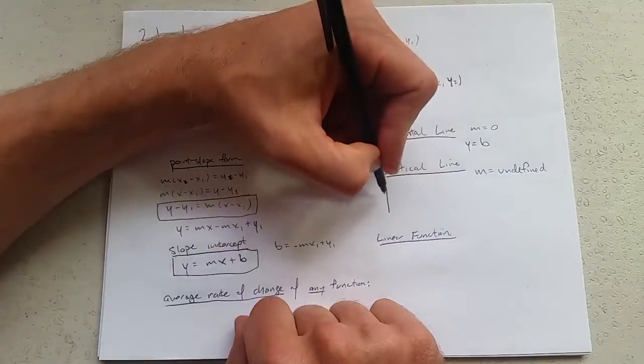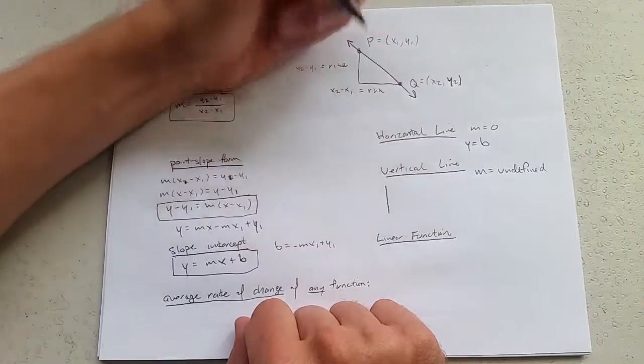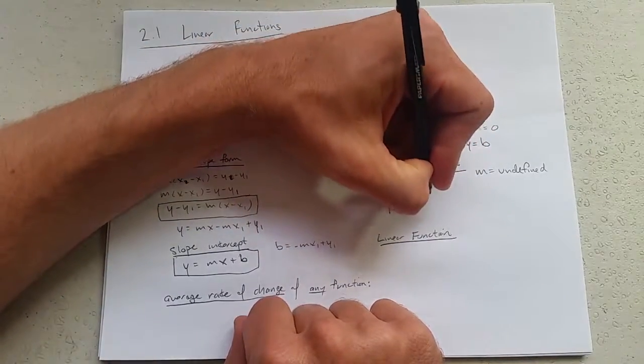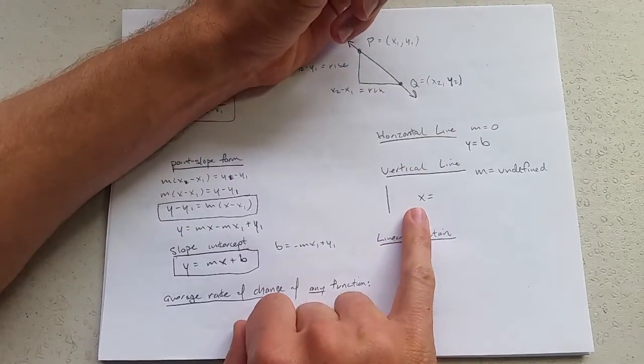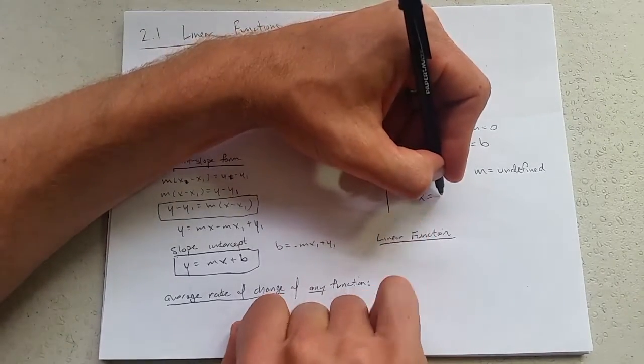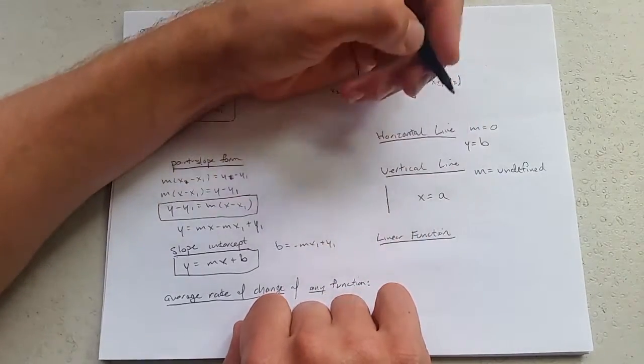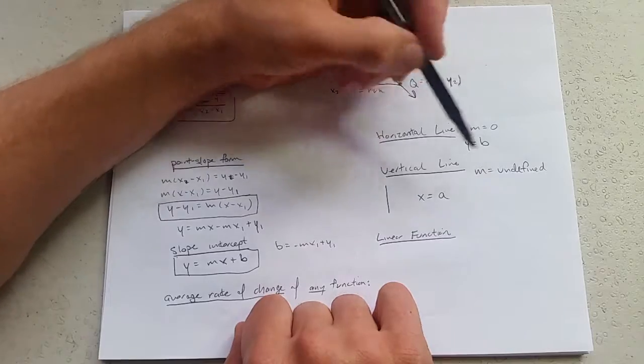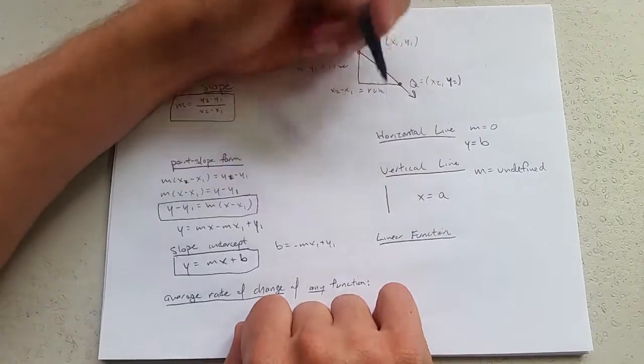How do we write a vertical line? Well, we know every single x-coordinate is going to be the same. So we're going to write it as x equals whatever x value you have. We'll just call it a. So this vertical line, you just get x equals a.